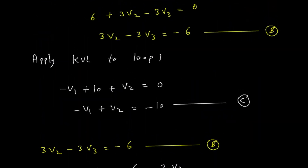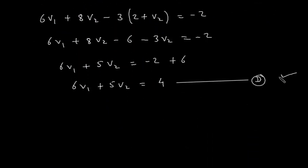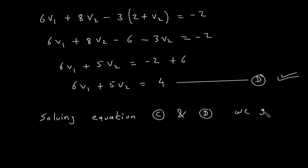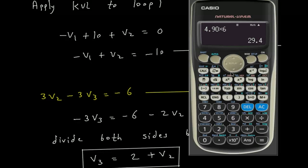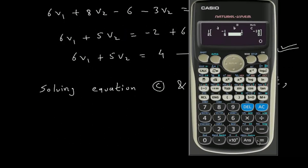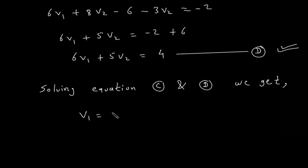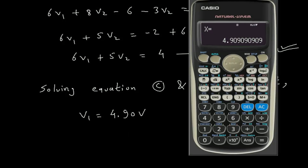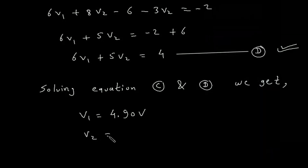Now we will solve equation C and equation D simultaneously. Solving equations C and D using a calculator, we get V1 is equal to 4.90 V and V2 is equal to minus 5.09 V.